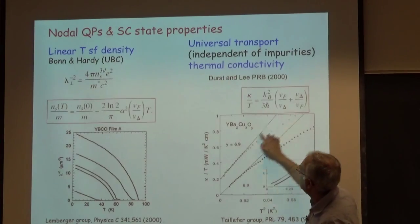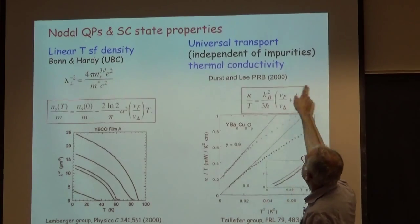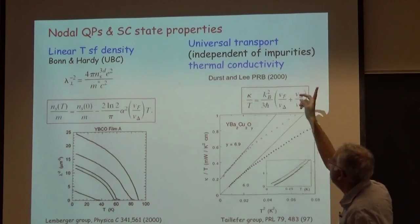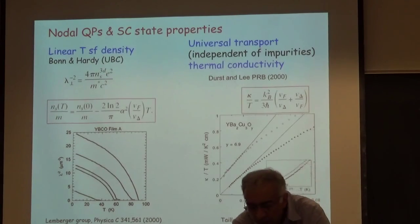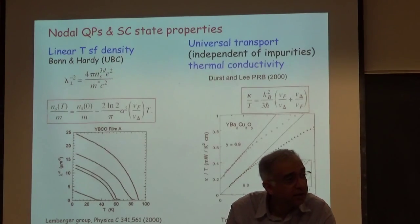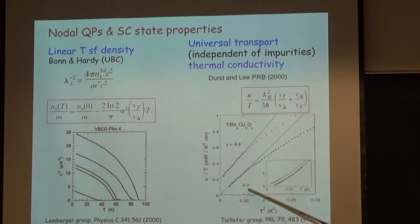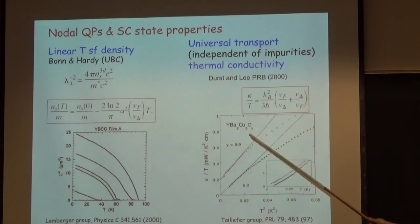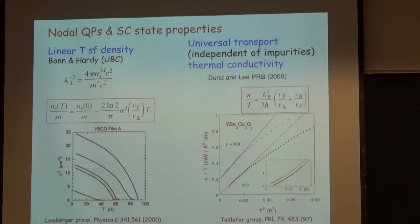Here is Louis Taillefer's data, plotting kappa over T on the y-axis versus T-squared. The reason to plot it like this is that the intercept gives you the electronic thermal conductivity, and the slope gives you the T-cubed thermal conductivity which is the phonon contribution. You can see that you get the universal electronic intercept value.